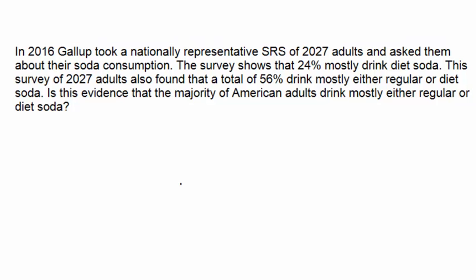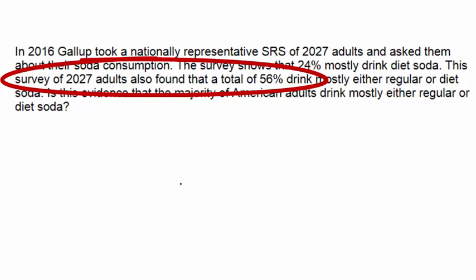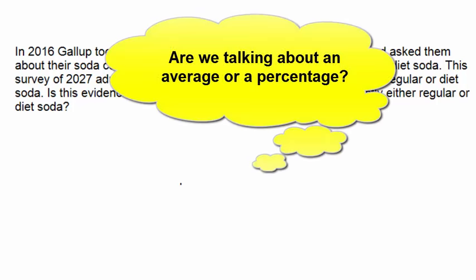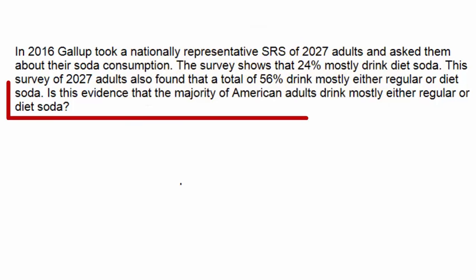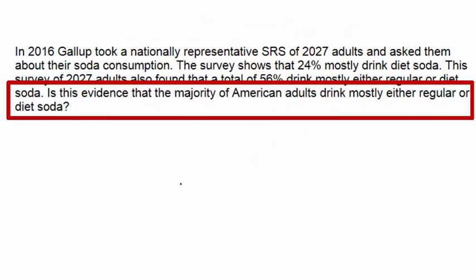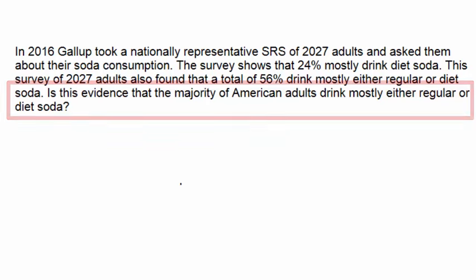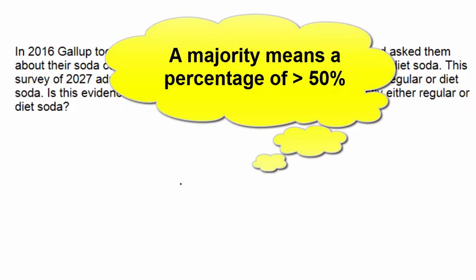This problem demonstrates how to perform a one-proportion z-test when you're given a percentage of the sample instead of the number x of the sample, which results in a value of x that is a decimal and not a whole number. The first thing to determine is whether this is a hypothesis test about a population mean or a population proportion. Since we're asked if the majority of American adults drink either regular or diet soda, and a majority exists when the proportion is more than 50%, this is a test about a proportion.